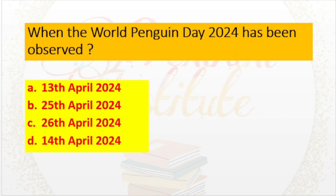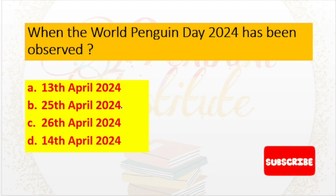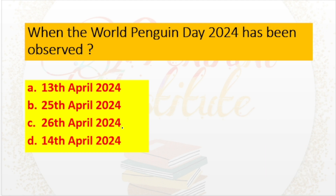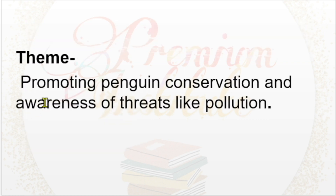When has the World Penguin Day 2024 been observed? a. 13th April 2024, b. 25th April 2024, c. 26th April 2024, d. 14th April 2024. Answer: 25th April 2024. Theme: Promoting Penguin Conservation and Awareness of Threats Like Pollution.